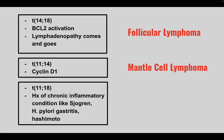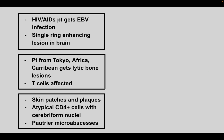Next is translocation 11;18, with a history of chronic inflammatory conditions like Sjögren's syndrome, H. pylori, and Hashimoto's. This is marginal zone lymphoma.